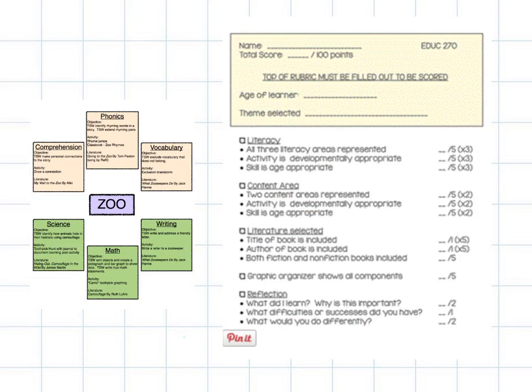Then moving on to our content areas. The fact that you have two content areas represented on your organizer is worth another two sets of five points. The activity is developmentally appropriate that you chose. And then that the skill is age appropriate. And those will be graded the same.